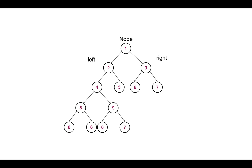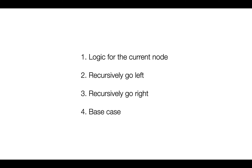And if there are no more nodes attached to the node, then we should stop, and this will be the base condition. So when we use recursion to solve tree-related problems, the steps are: we do the logic or calculation at the current node, we call the function recursively for the left node.